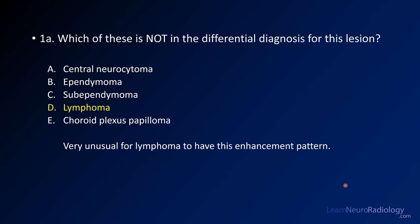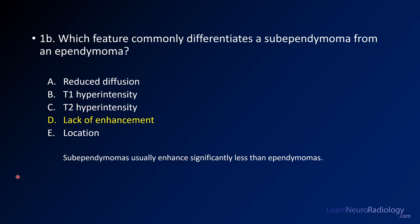For question one, this is definitely not a lymphoma — lymphoma doesn't have this enhancement pattern, it's much more solid appearing, and the location isn't right. Differentiating lymphoma from central neurocytoma is something the ABR examinations definitely want you to be able to do. For question two, what differentiates a sub-ependymoma from an ependymoma is that lack of enhancement — sub-ependymomas enhance significantly less. If you see a non-enhancing ventricular mass along the ependyma, think sub-ependymoma.